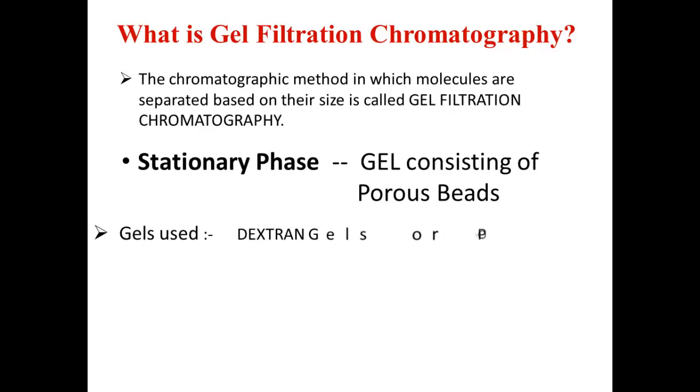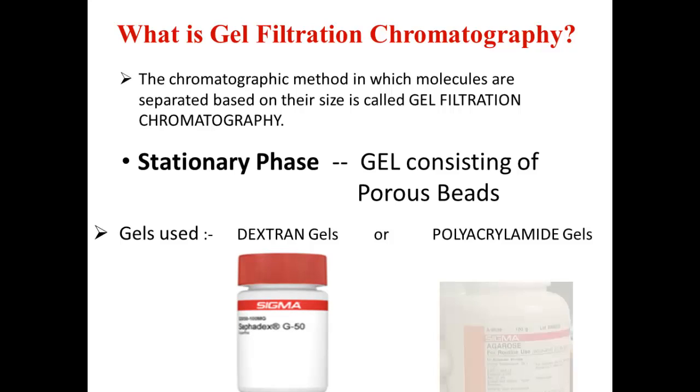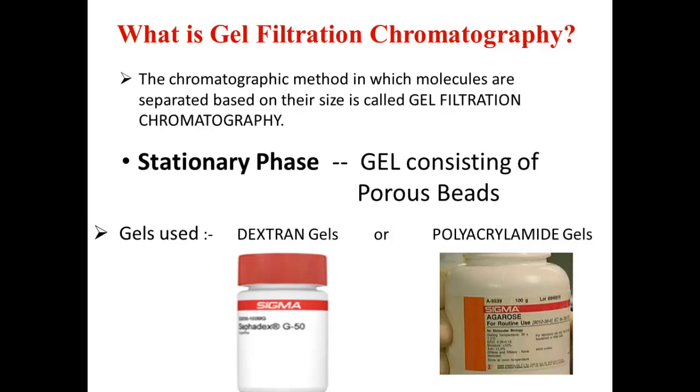Most widely used gels for this chromatography are dextran gels or polyacrylamide gels. This is Sephadex G50 which is a dextran gel, and this is Agarose which is a polyacrylamide gel.